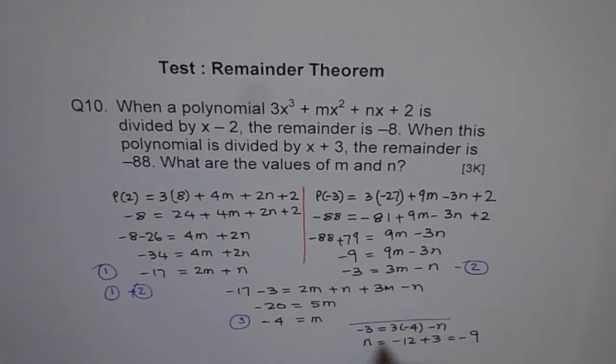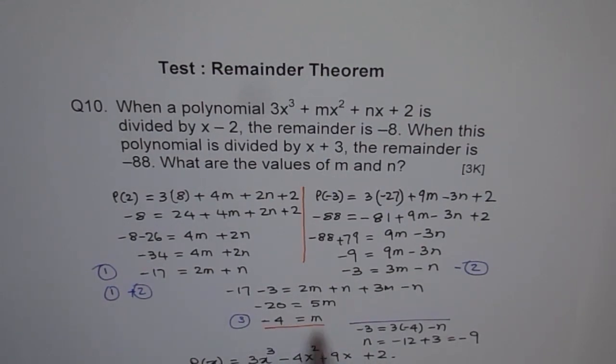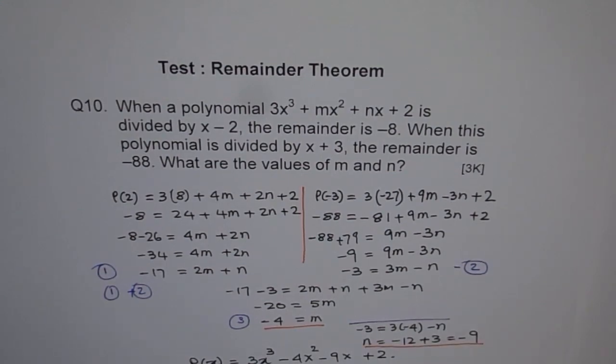Therefore, we get our equation as, let's write down polynomial now as 3x³ + m is -4. Let me write -4x² and n is -9. So let's write -9x + 2. So that's our equation. So you know, m is -4 and n is -9. That's how we are going to solve these equations. I hope you understand. Thank you.